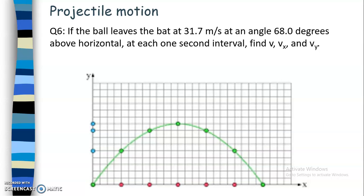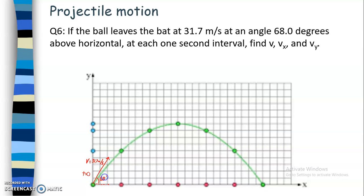In this video I'm going to go through an example of a projectile that is initially at 31.7 meters per second at an angle 68 degrees above the horizontal. We're going to look at what the overall velocity is, the x velocity, and the y velocity at each one second interval. At t equals zero seconds, velocity v is equal to 31.7 meters per second, and this angle relative to the horizontal is 68 degrees.